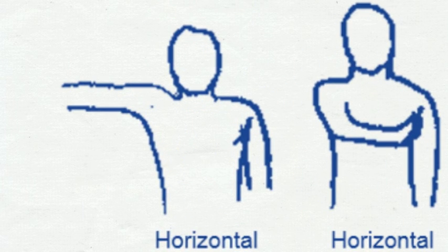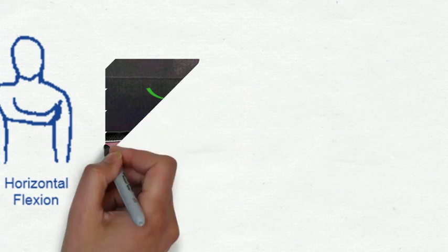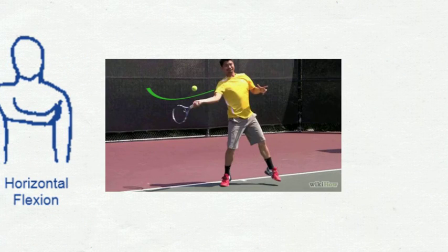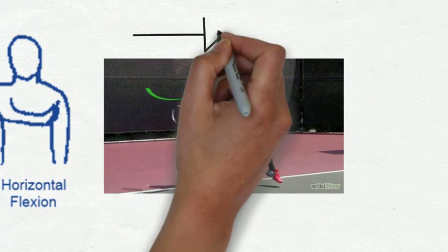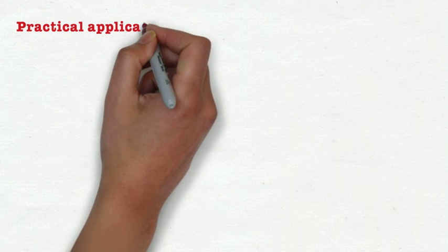Getting towards the end of these now. So here we've got horizontal flexion and extension. So as the arm moves across our body, we say that we've got flexion. And this is a really good example in tennis. If we're just doing a forehand, your arm is moving across back into the midline. And we call that horizontal flexion.